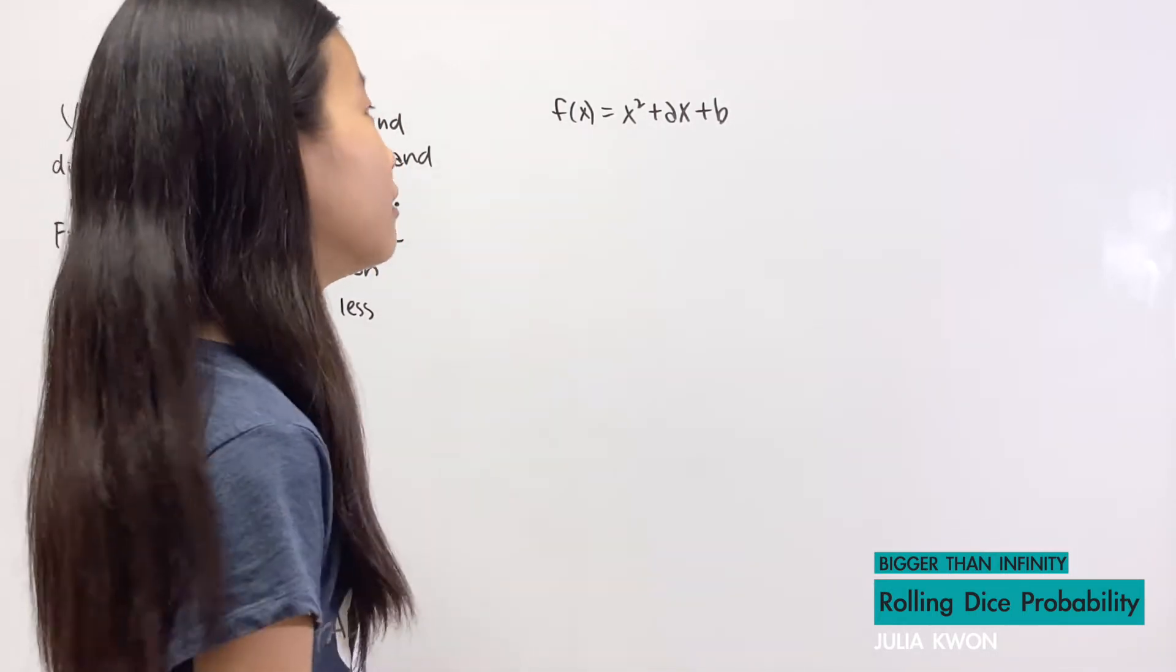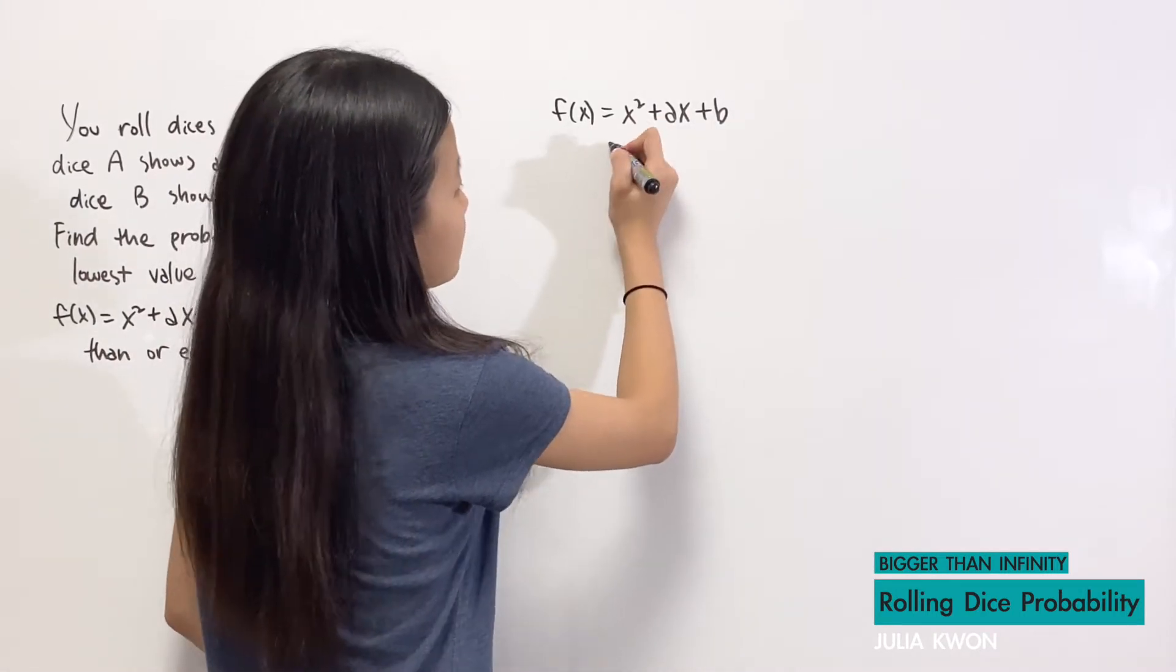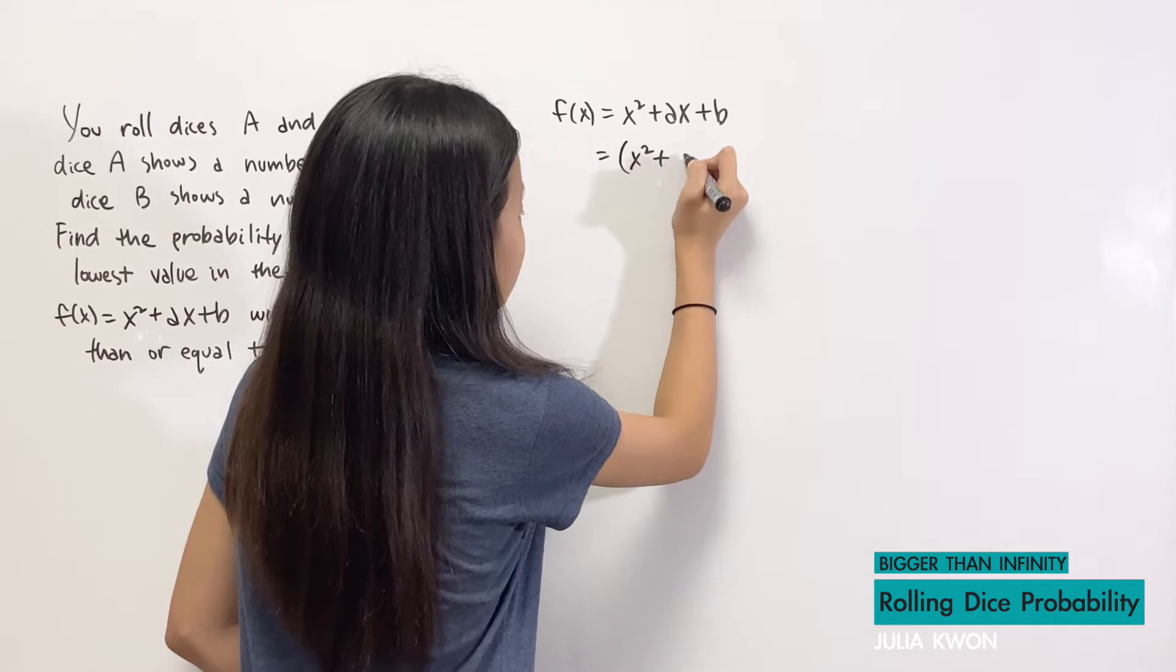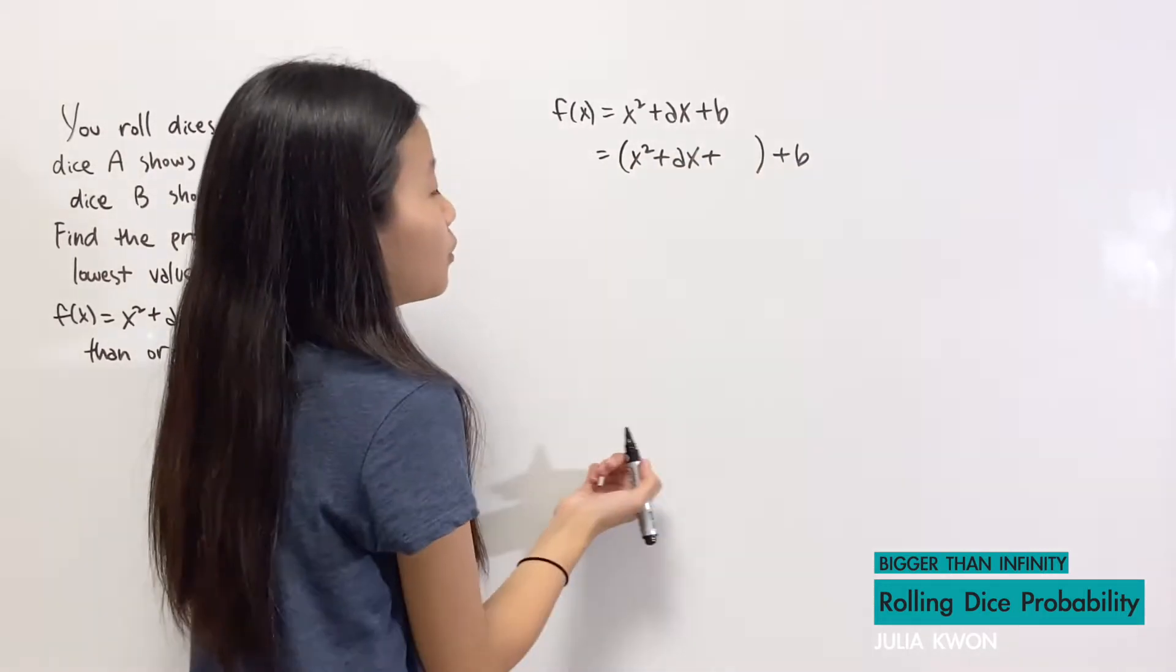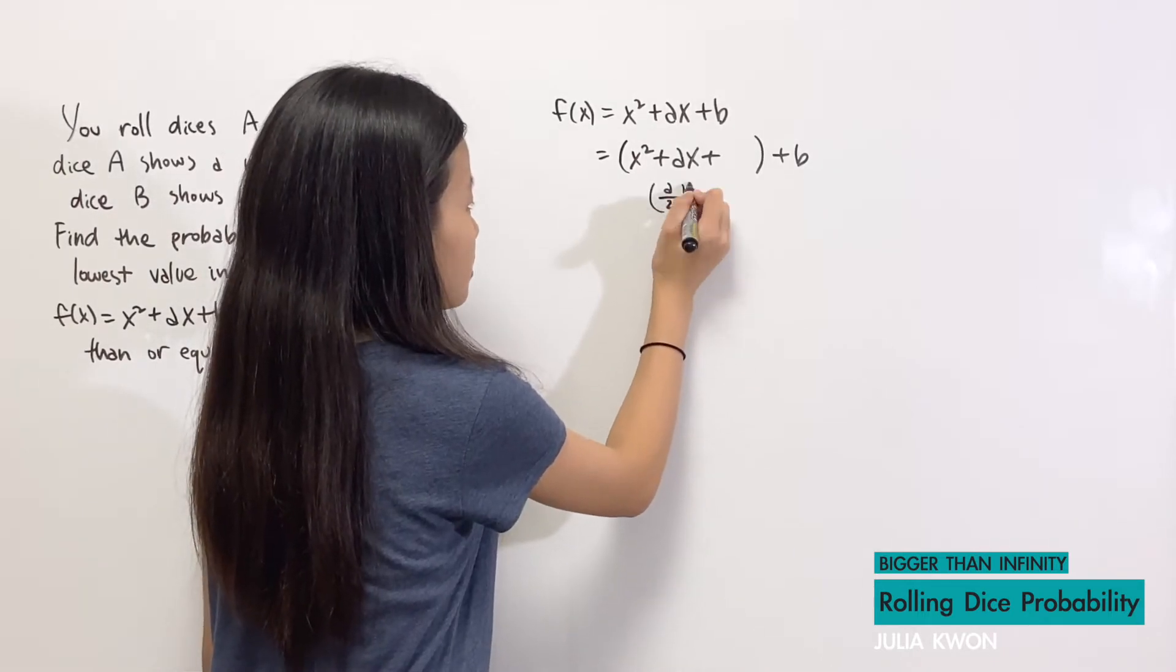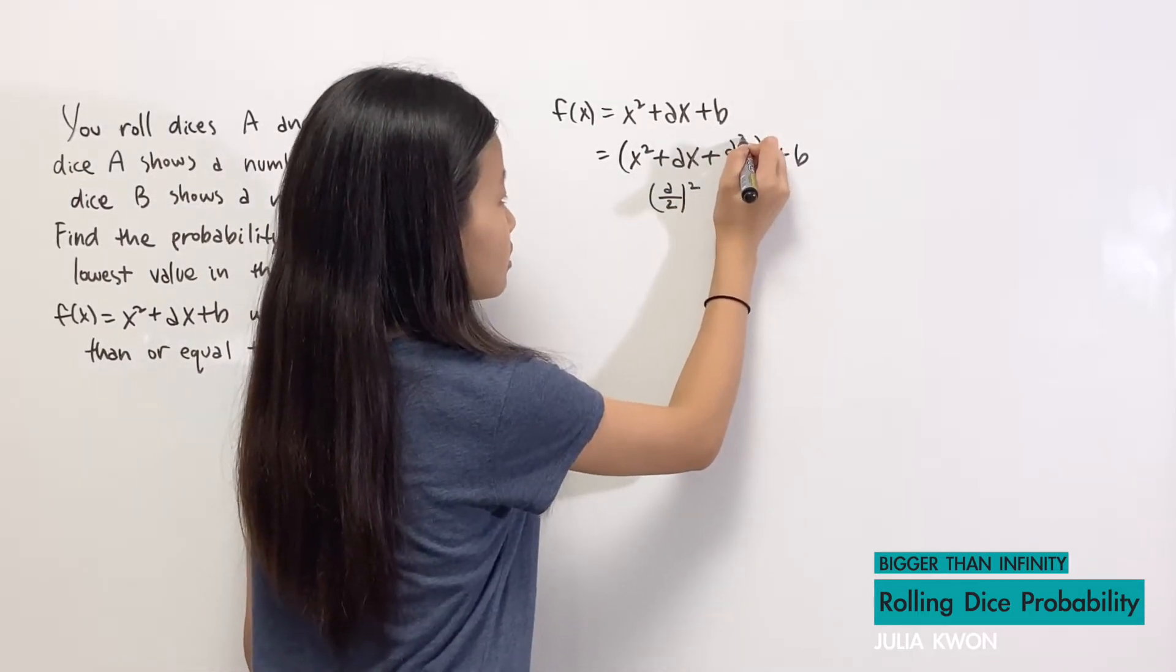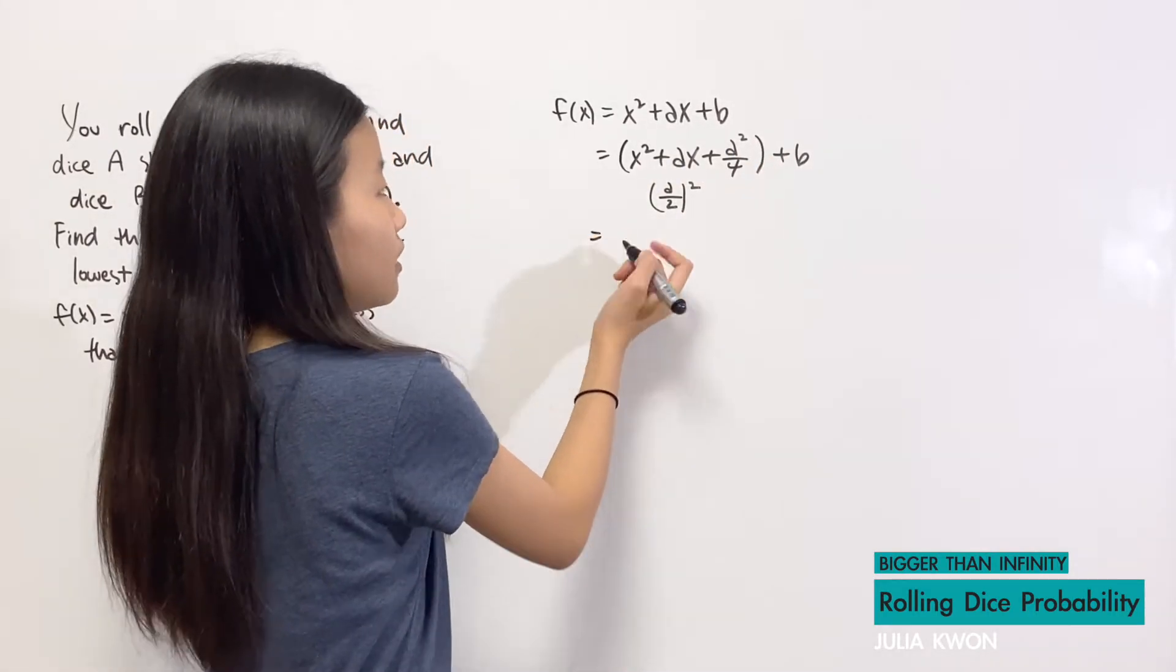And so by completing the square, we're going to divide a by 2 and then square it. That will give us a² divided by 4, and now we can complete the square.